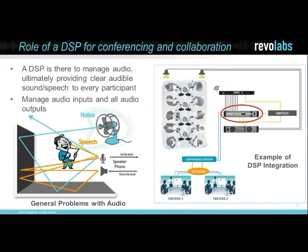Let's discuss the DSP's role in conference and collaboration technologies. Most people think audio is easy — all you need is a microphone and a speaker. That is a wrong analysis. You have to collect all the speakers' voices in a location and send them to desired endpoints, making them intelligible. You've got to reduce noise, reduce echo, and make this sound well so everyone can hear. Your endpoints may be through a network — a Dante appliance, an AVB appliance, a conference system, or a local amplifier. The DSP is there to manage all the audio.